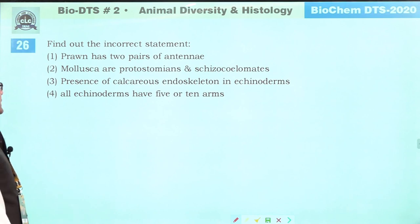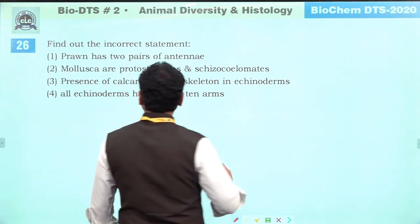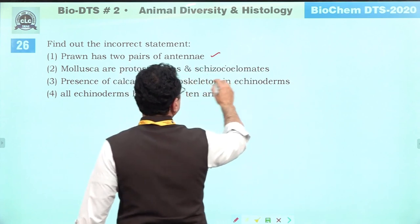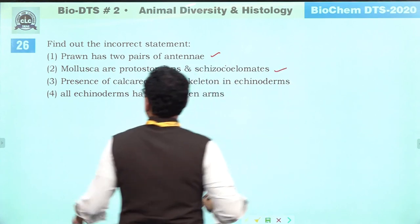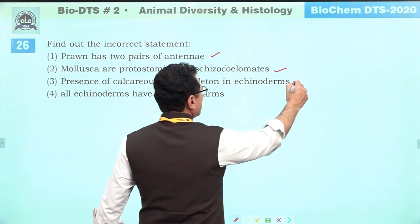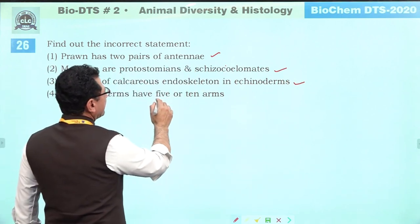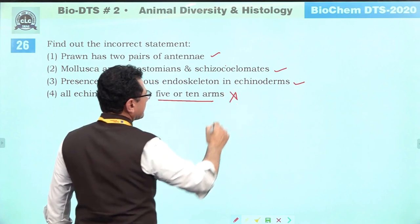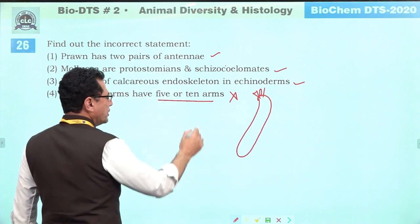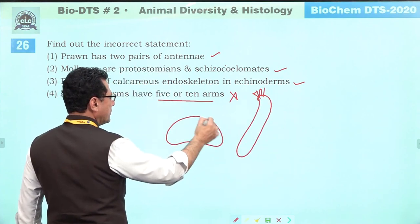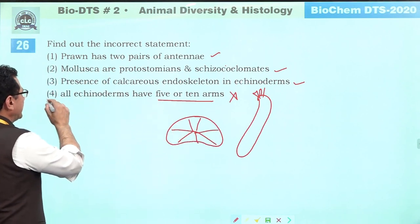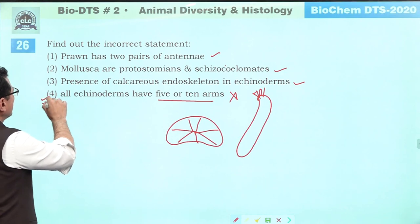Find the incorrect statement. Prawn has two pairs of antennae — absolutely correct. Mollusca are protostomians and schizocoelomata — correct. Presence of calcareous endoskeleton in echinoderms — yes. All echinoderms have 5 or 10 arms — this is incorrect. Holothuria does not have 5 or 10 arms; sea urchin does not either. So this statement is partially/incorrectly stated. Answer is fourth.